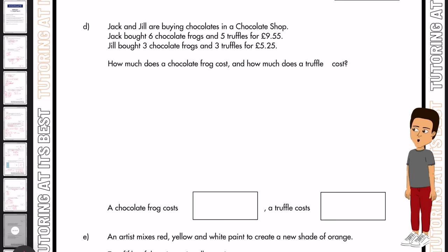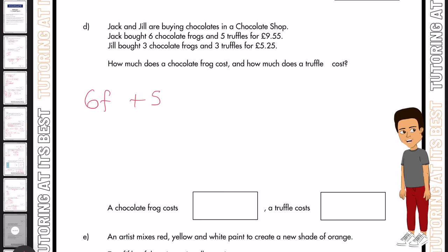And for part D. Jack and Jill are buying chocolates in a chocolate shop. Jack bought six chocolate frogs and five truffles for £9.55. And Jill bought three chocolate frogs and three truffles for £5.25. So how much does a chocolate frog cost, and how much does a truffle cost?